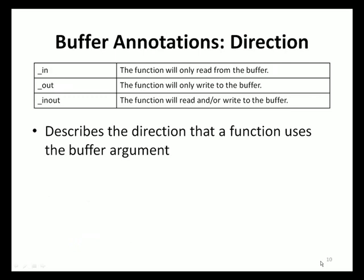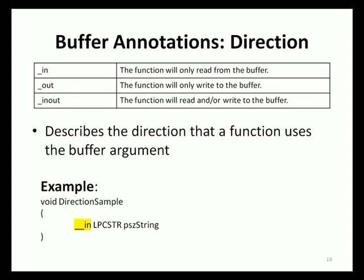The annotations found in the direction category indicate in what direction a function will use a buffer argument. If the _in annotation is specified, it indicates that the function will only read from the given buffer and not write into it. If the _out annotation is specified, this indicates that the function intends to write into the buffer but not read from it. If the _inout annotation is specified, this indicates that the function will read and/or write to the buffer. In sample code illustrating _in, a function called direction_sample is declared with one argument pscString, specifying that pscString will only be read from and not written to.